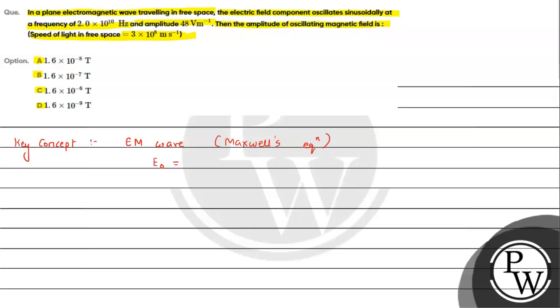E₀/B₀ = c. That is, the peak value of the electric field vector upon the peak value of the magnetic field vector gives the value of the speed of light. For this question, we can use this relation directly.